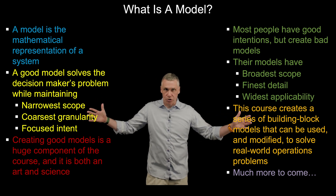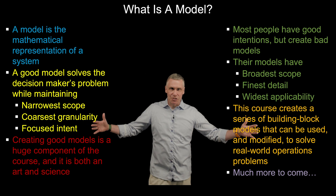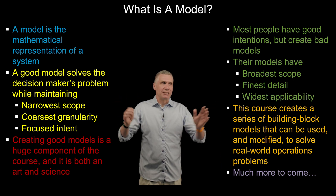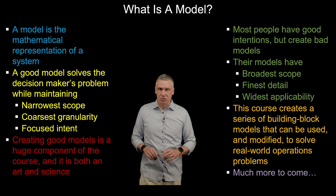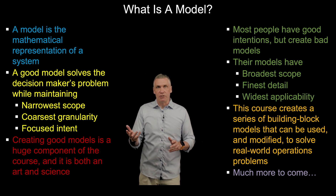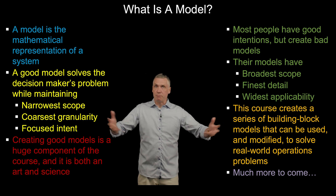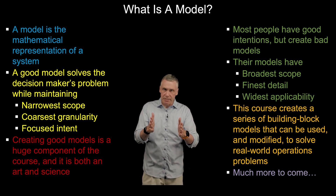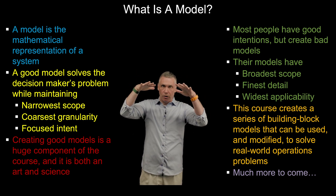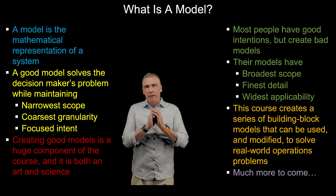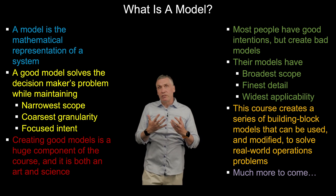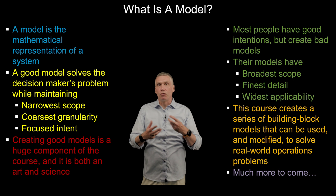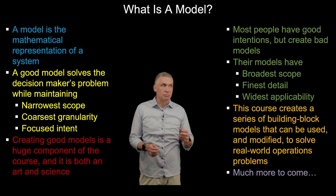Most people have good intentions but create very bad models — the exact opposite of what we want. Their models have the broadest scope, the finest detail, and the widest applicability, trying to solve all sorts of problems. Don't do that. What we want is the narrowest scope, coarsest granularity, and focused intent. This course creates a series of building block models that can be used as-is or built upon to solve real supply chain problems.